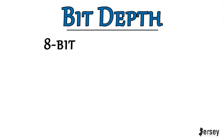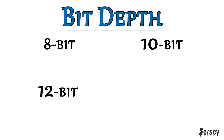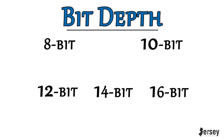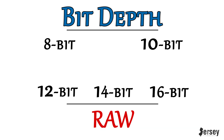So let's start with bit depth. Generally, you see 8-bit and 10-bit on consumer and even pro-level cameras. 12-bit, 14-bit, and 16-bit are usually raw capabilities and are super heavy files.